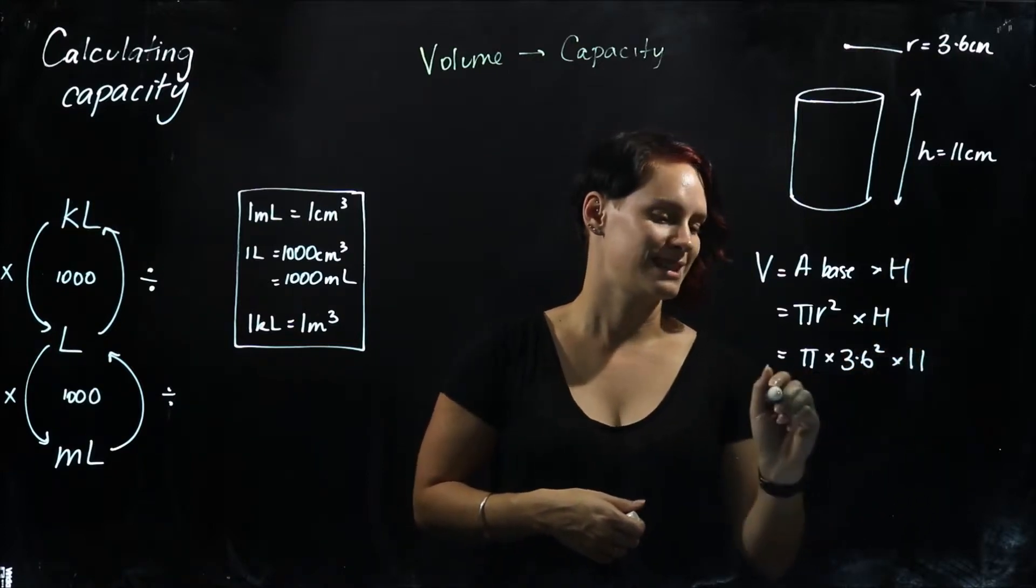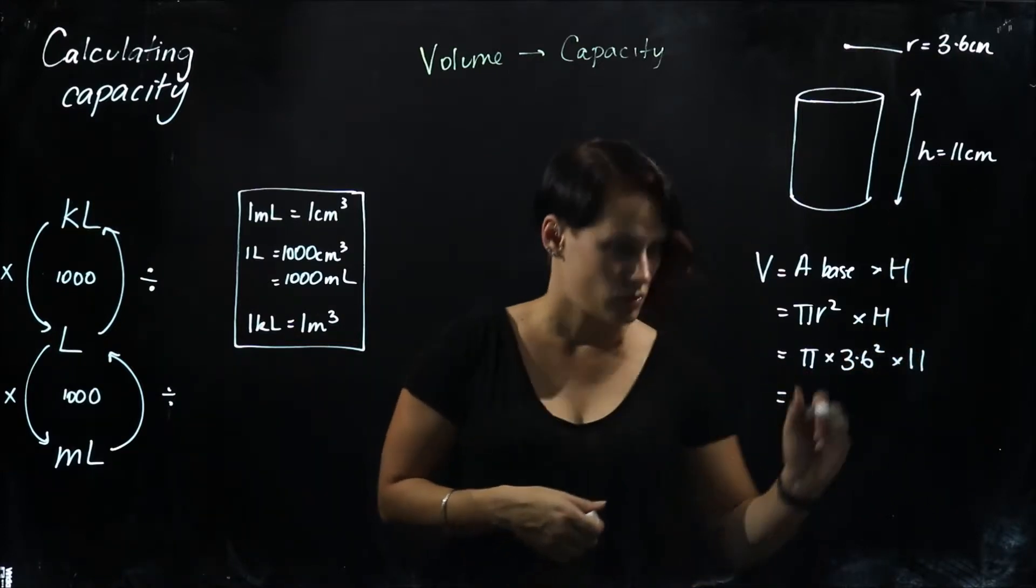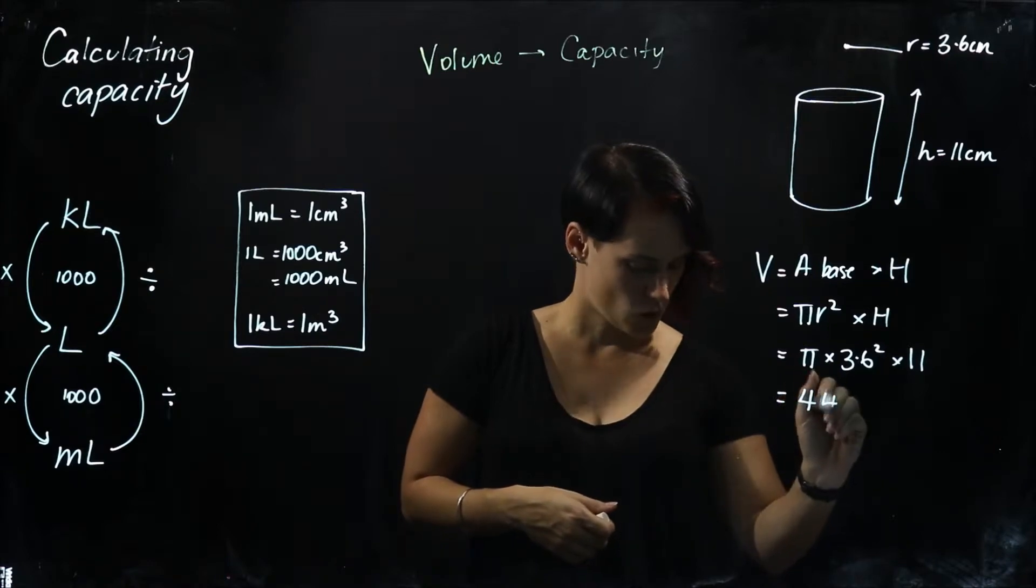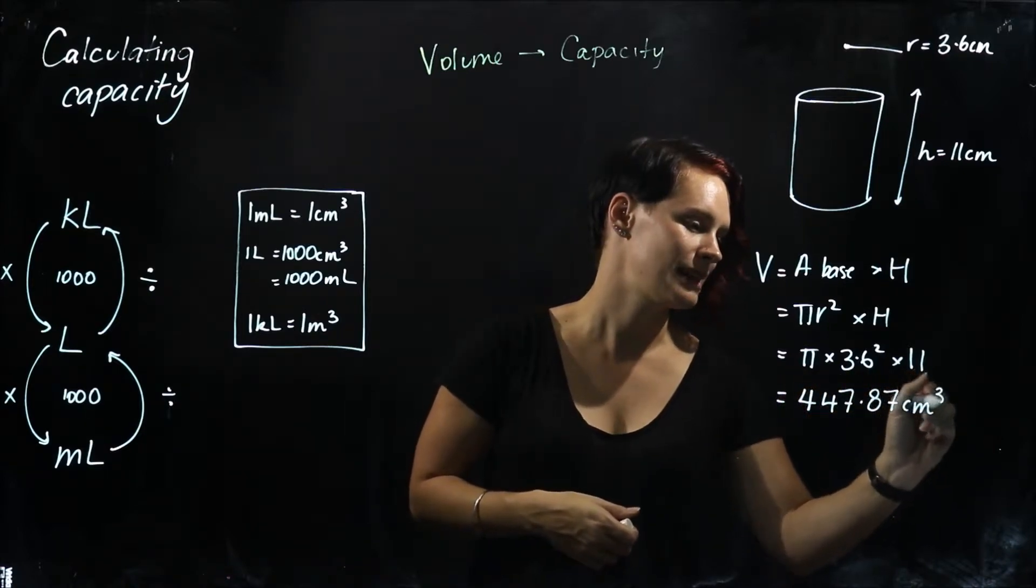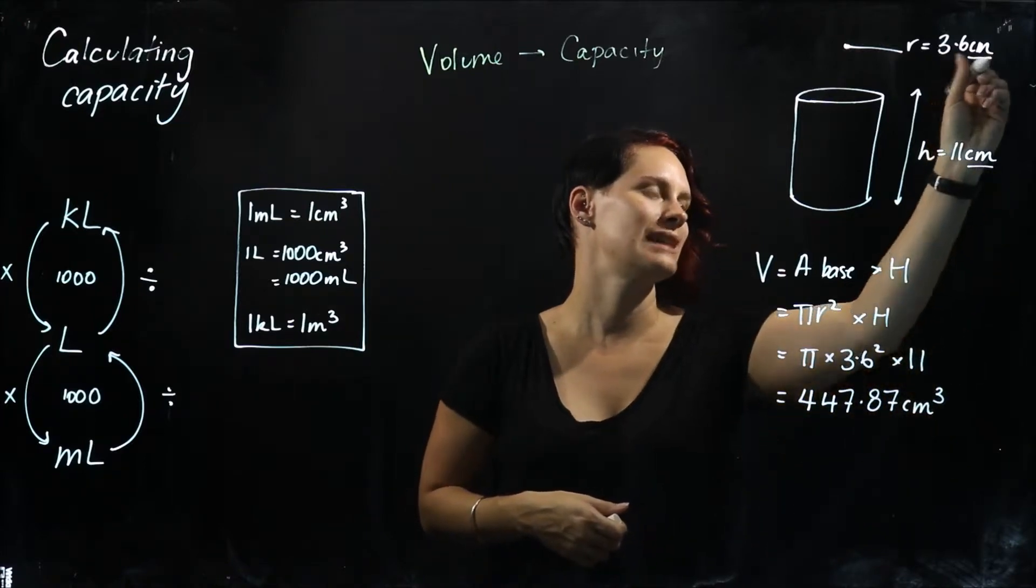Multiplied by my height which is 11, and my answer will give me 447.87 cubic centimeters. Remembering I've measured all this in centimeters.